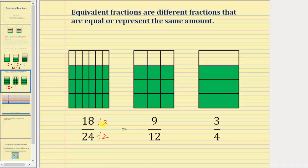This shows that when we divide the numerator and denominator by a whole number to obtain an equivalent fraction, what we're doing is representing the amount using larger pieces. And to go from nine-twelfths to three-fourths, notice how we would have to divide the numerator and denominator by three. Nine divided by three equals three, and twelve divided by three equals four. Again, this shows that by obtaining an equivalent fraction by dividing, we're representing the same amount using larger pieces.